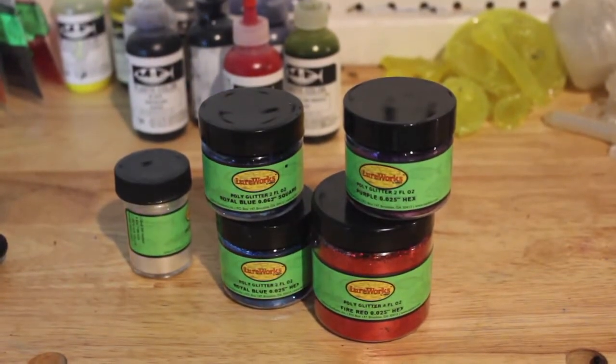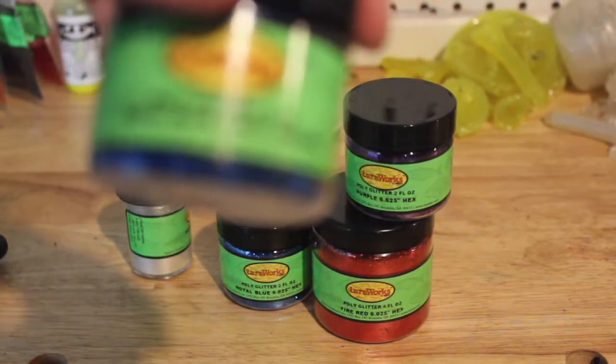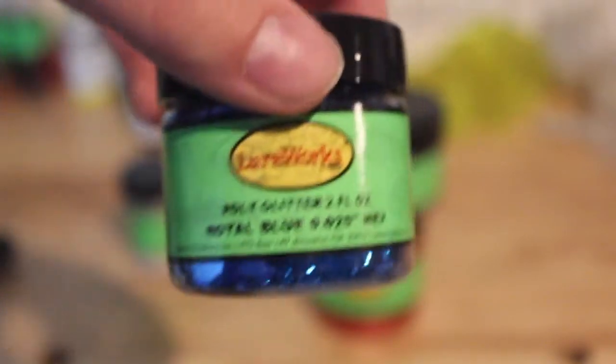These are new glitters I got for some testing out lure works. So I got blue. They accidentally sent me 0.62 square, so I emailed them and they sent me my 0.25. Also when they sent me that back, they sent me orange glitter, black glitter, which is string glitter, which will be interesting.